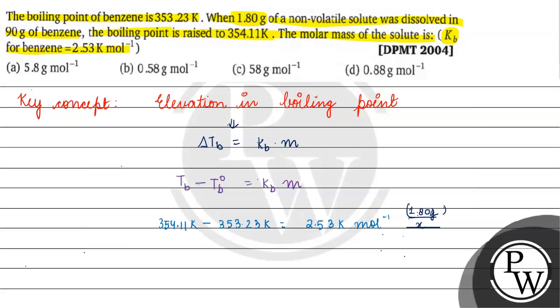Mass of solvent is 90 grams. We will convert it to kilograms. 1 gram is basically equals to 10 to the power minus 3 kg, so 90 into 10 to the power minus 3 kg.